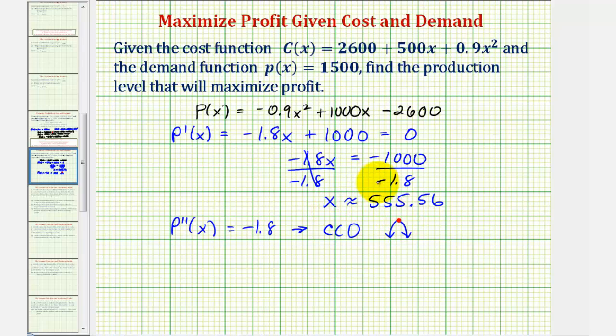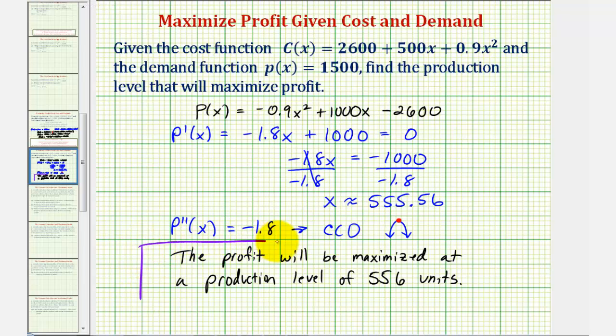But because x represents the quantity produced and sold, we should round this to the nearest whole number, so we'll round this to 556. So we can say the profit will be maximized at a production level of 556 units. I hope you found this helpful.